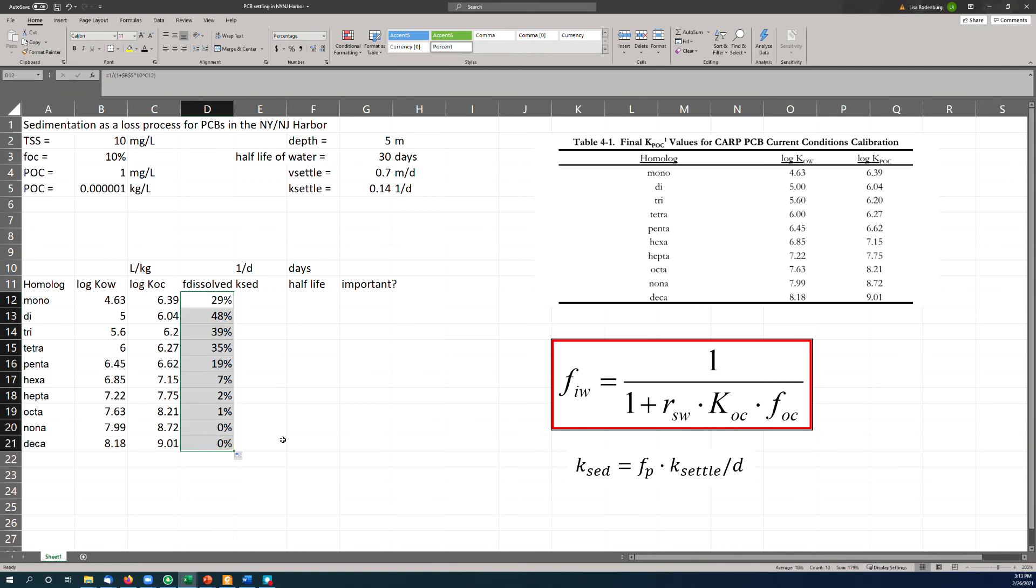So we have to recalculate POC in units of kilograms per liter. And to do that, we divide by 10 to the sixth. So there we go. And now if we do this in terms of kilograms per liter, now we get only about 29% of our chemical is dissolved. Now I understand why Lisa is making us do this homework assignment. This makes much more sense now. You have a wide variety of different amounts of the chemical. Even the deca has a tiny little fraction of about 0.1% of the deca in the dissolved phase.